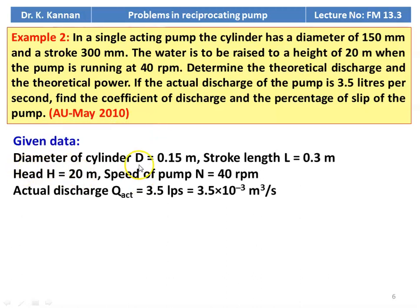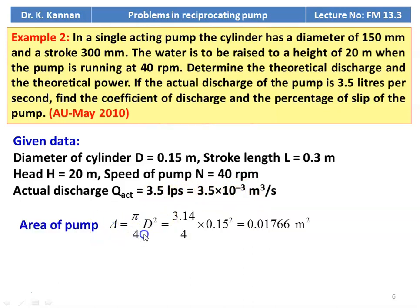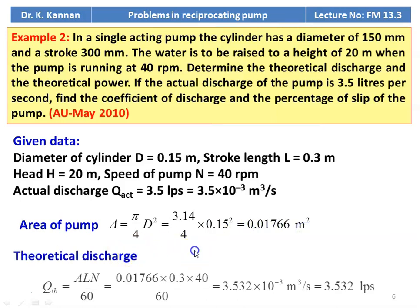Given: diameter = 0.15 m, stroke length L = 0.3 m, head H = 20 m, speed N = 40 RPM, actual discharge = 3.5 LPS = 3.5×10⁻³ m³/s. Area of pump A = π/4 × D² = 3.14/4 × 0.15² = 0.01766 m². Theoretical discharge Q_theoretical = A×L×N/60 = 0.01766 × 0.3 × 40/60 = 3.532×10⁻³ m³/s = 3.532 liters/s.